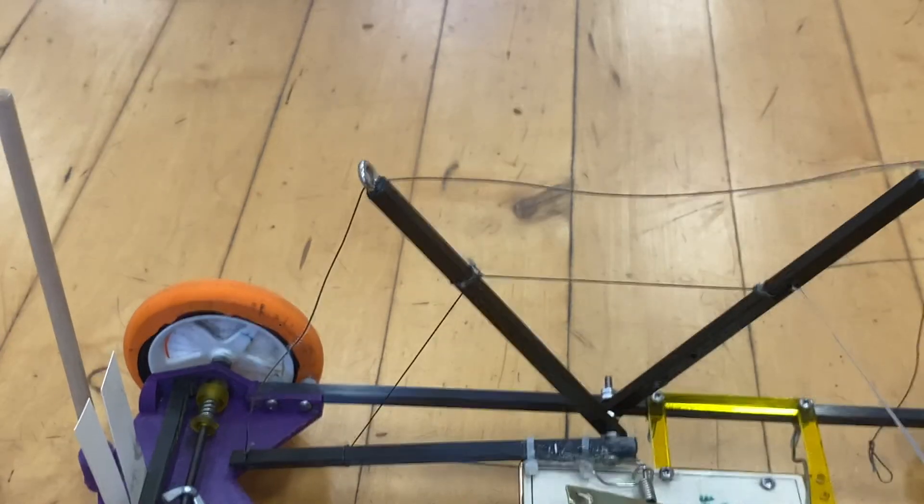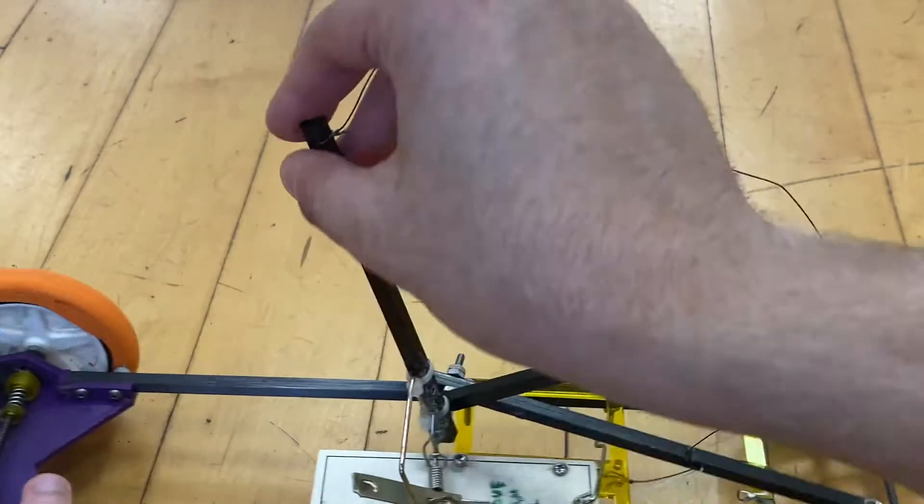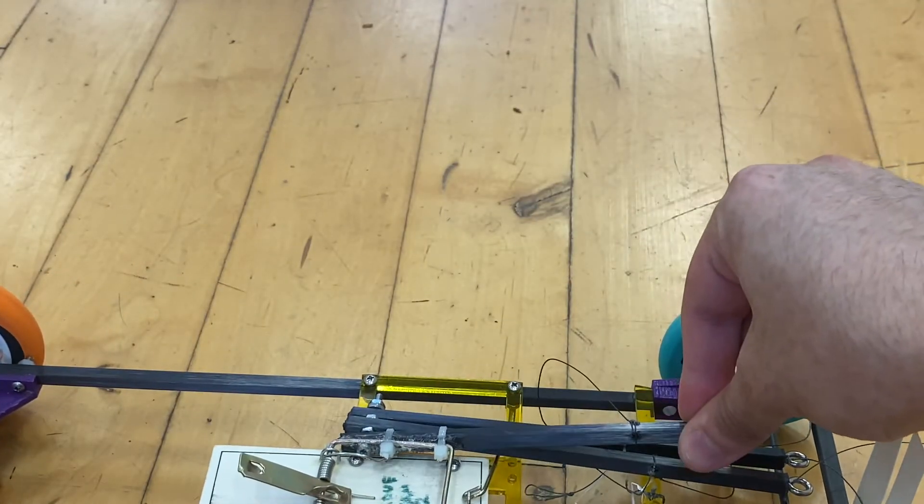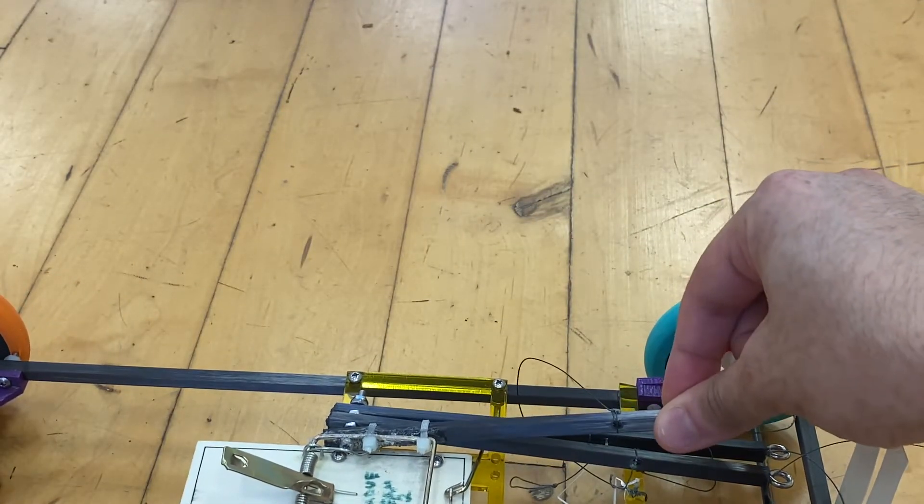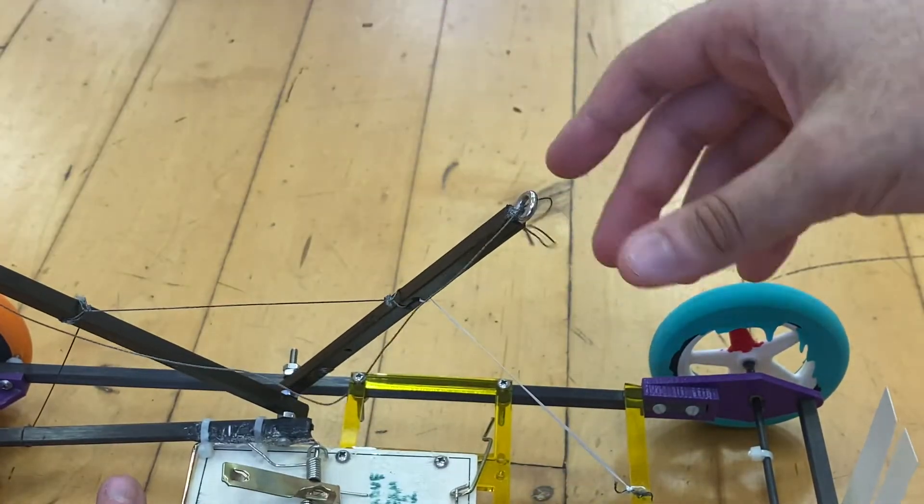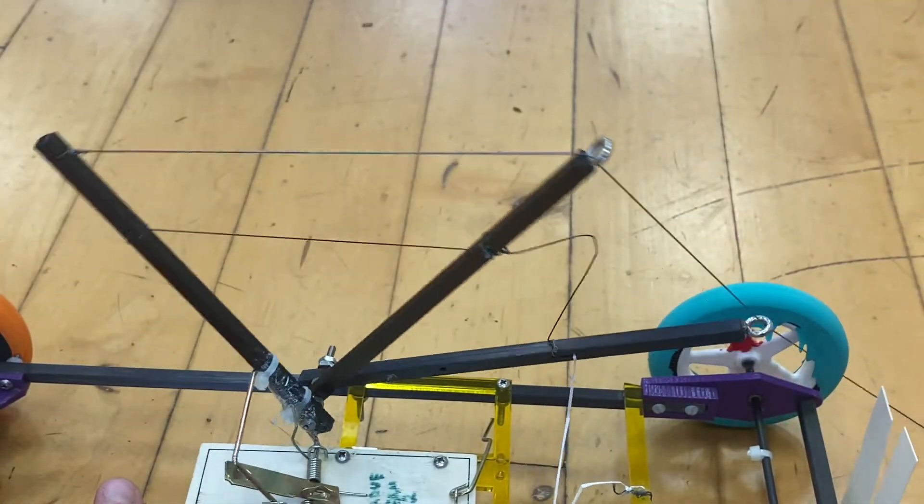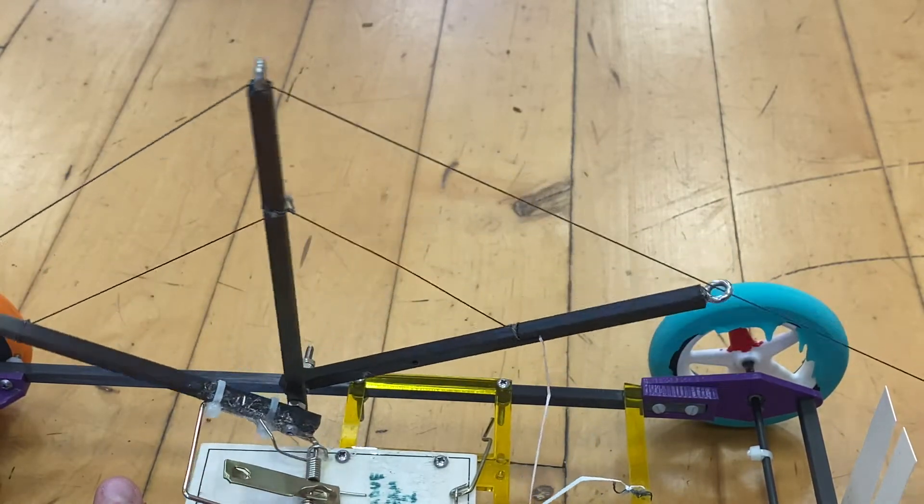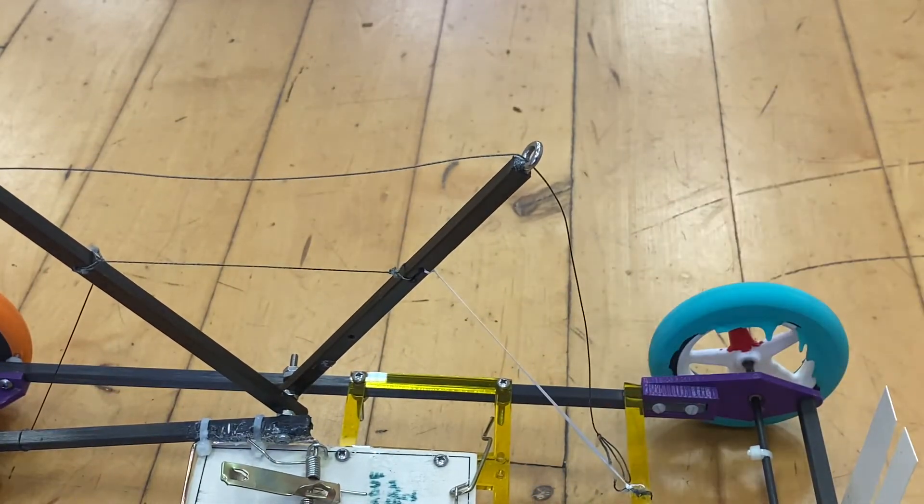So basically the way it works is that you have these three lever arms that are right here. So when your mousetrap vehicle is locked, all three come back and then as they come up, the string will be pulled through these little hoops and that's how you pull your car.